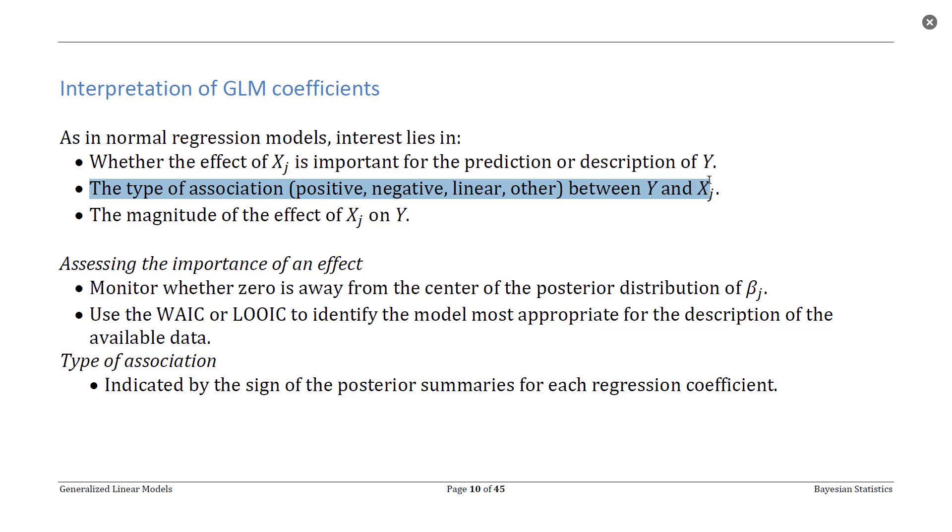Assuming that it should be in the model, a very natural question is what type of association is there between our response and that predictor? We want to know whether the association is positive or negative, is it a linear relationship, is it a quadratic relationship or some other relationship. So we want to identify how the variables seem to be related.